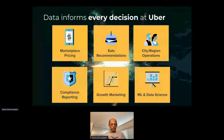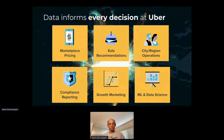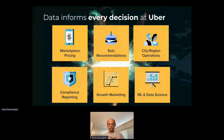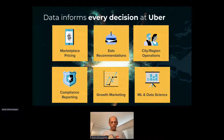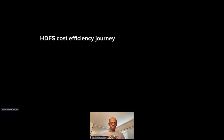For Uber, data is very key — it's at the center of a lot of decisions. Marketplace pricing, search pricing, the recommendations you see on the Eats delivery app, city and regional operations monitoring supply and demand — all come from data. Data powers compliance reporting, marketing, and our ML engineers and data scientists use it to build models and identify opportunities. Data is central to how Uber operates.